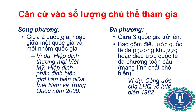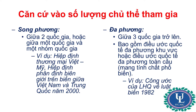Điều ước quốc tế song phương là loại điều ước được ký kết giữa hai quốc gia với nhau, hoặc có thể được ký kết giữa một quốc gia với tư cách là một bên và một nhóm quốc gia với tư cách là bên còn lại. Ví dụ: hiệp định thương mại Việt Nam – Hoa Kỳ, hoặc hiệp định phân định biên giới trên biển giữa Việt Nam và Trung Quốc năm 2000.